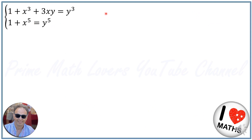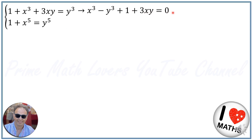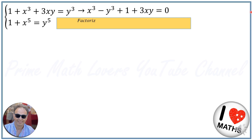Starting with the first equation, I move y cubed to the right-hand side, resulting in x cubed minus y cubed plus 1 plus 3xy is equal to 0. We can apply the identity known as the factorization of the sum of cubes in algebra.